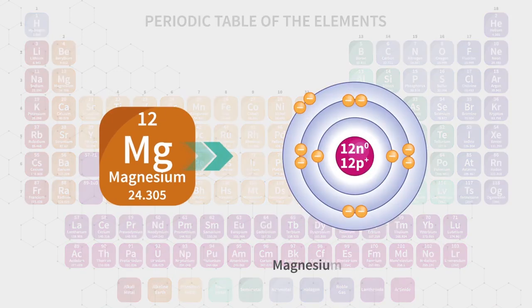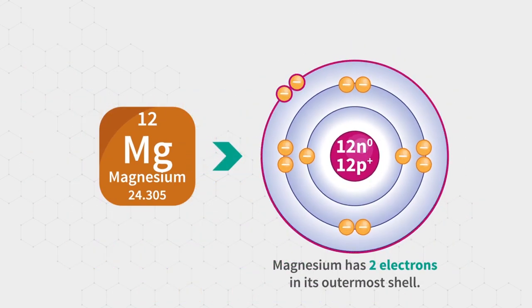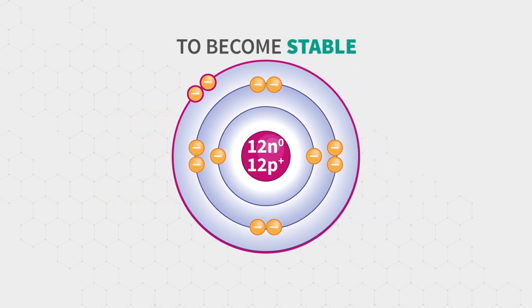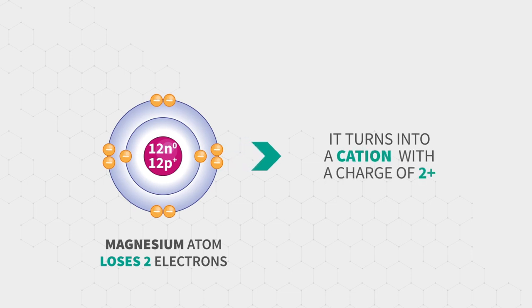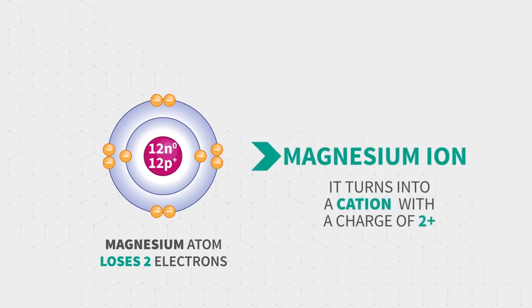Magnesium has two electrons in its outermost shell. To become stable, magnesium tends to lose the two electrons from its outermost shell. When the magnesium atom loses two electrons, it turns into a cation with a charge of two plus. It is called magnesium ion and it is written as Mg2 plus.